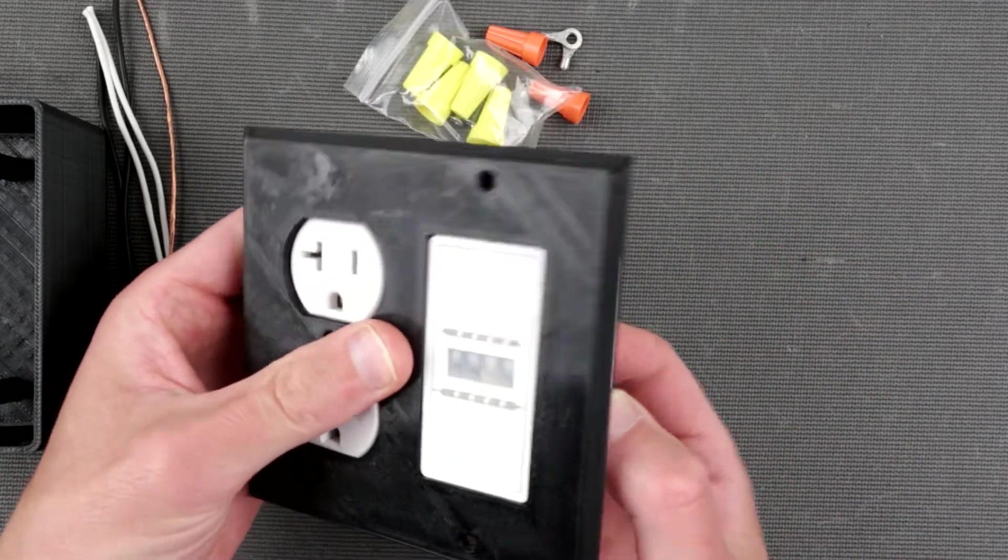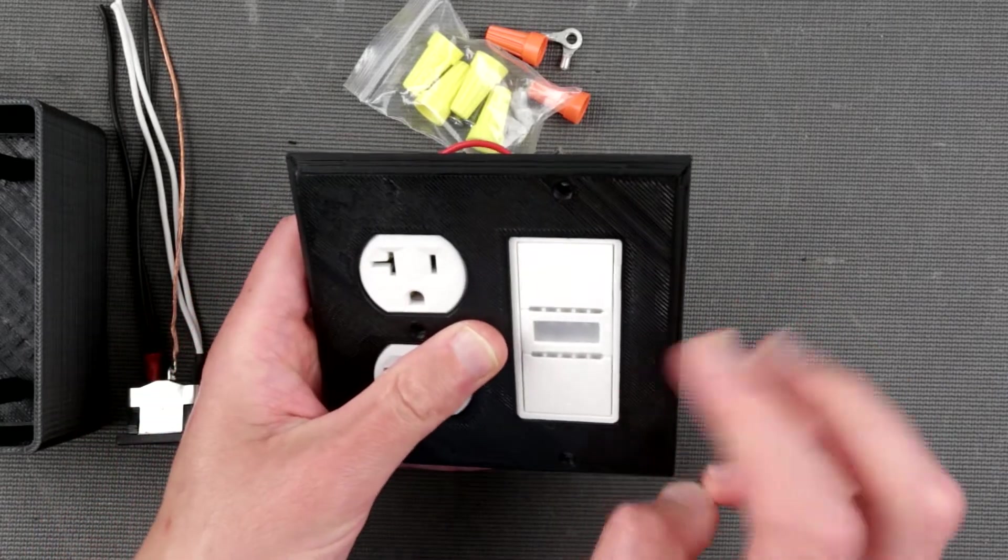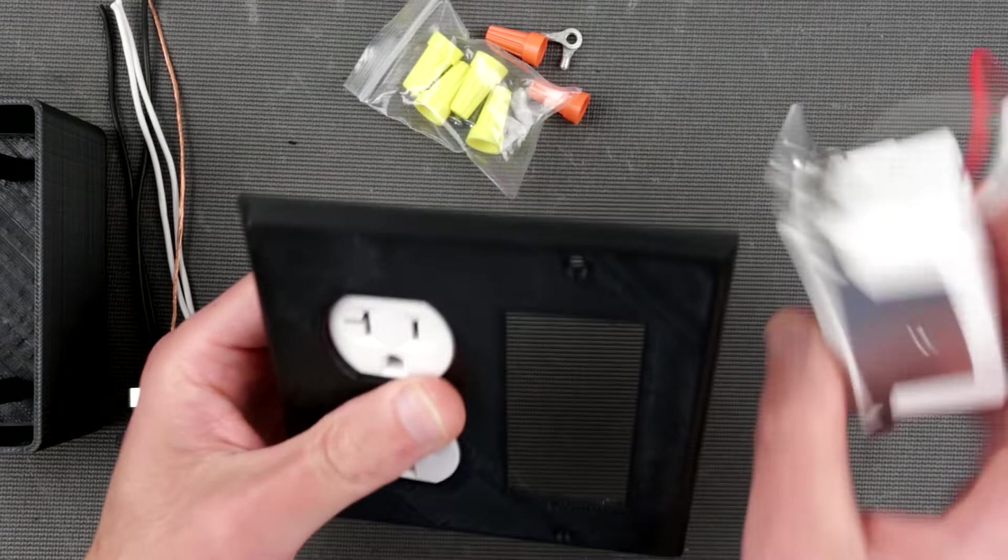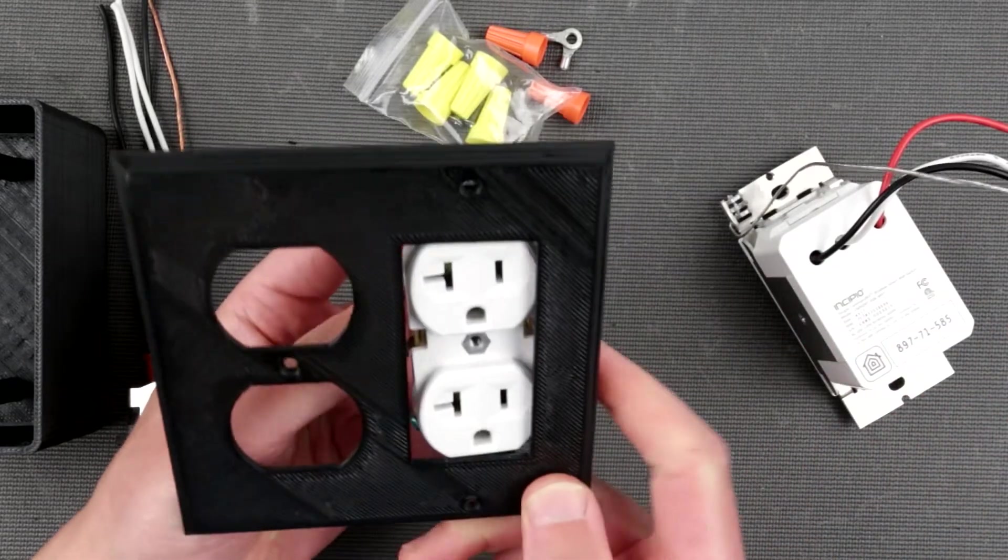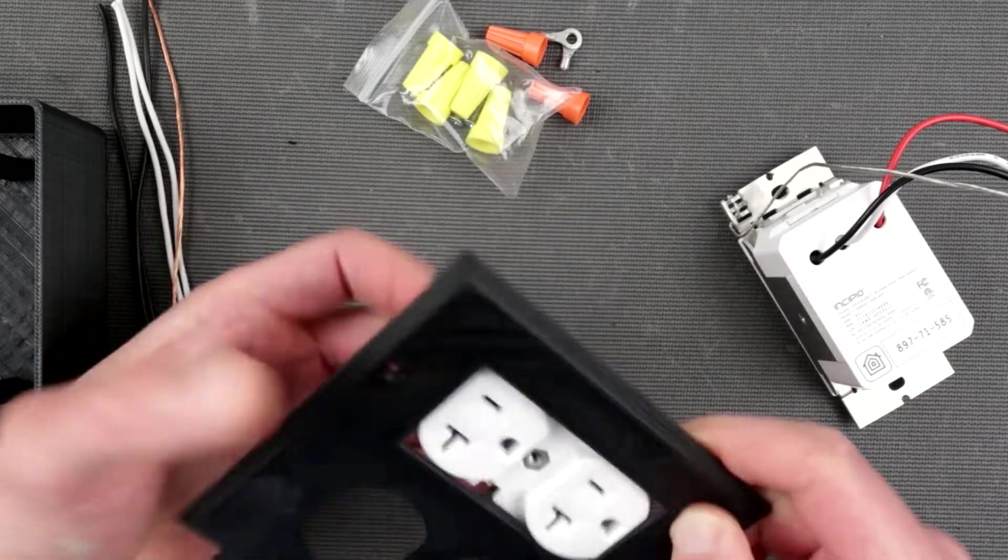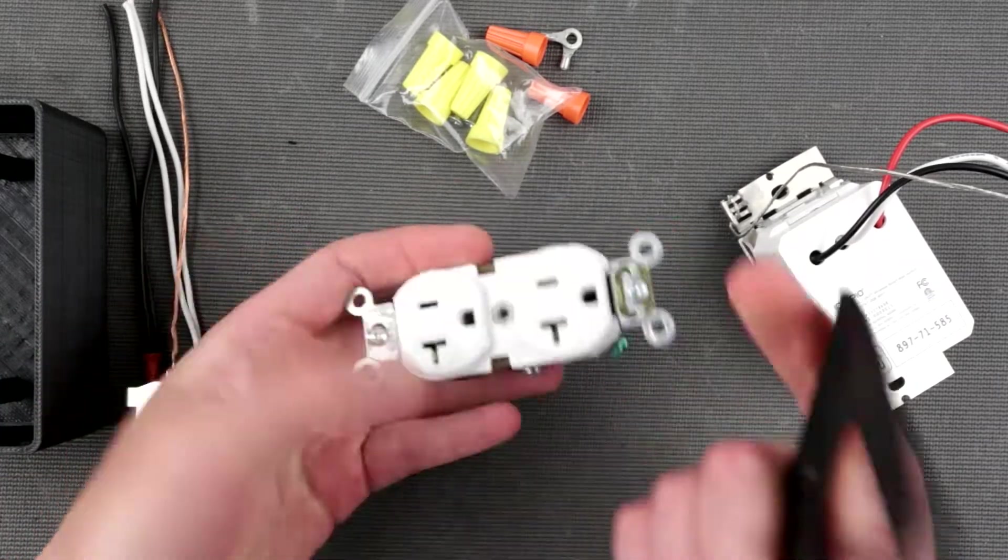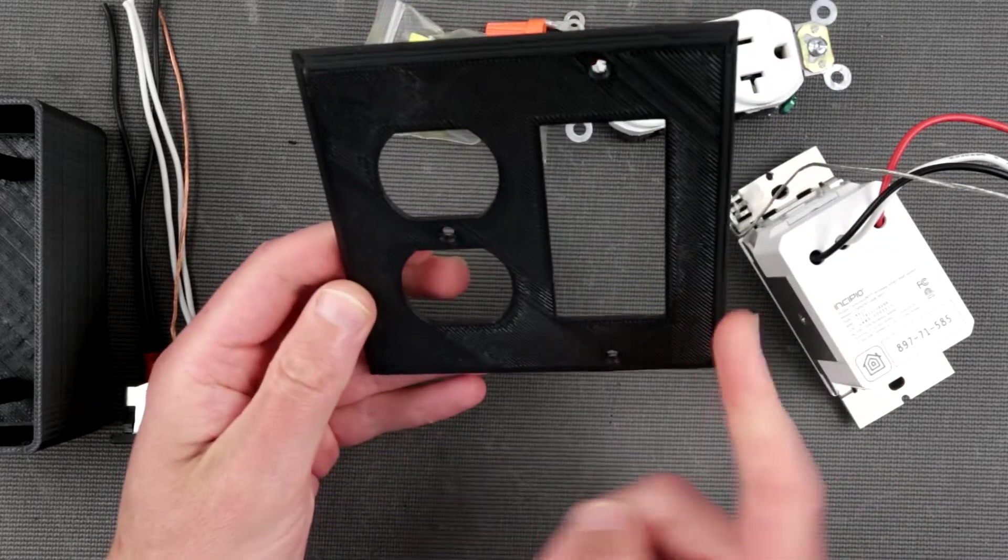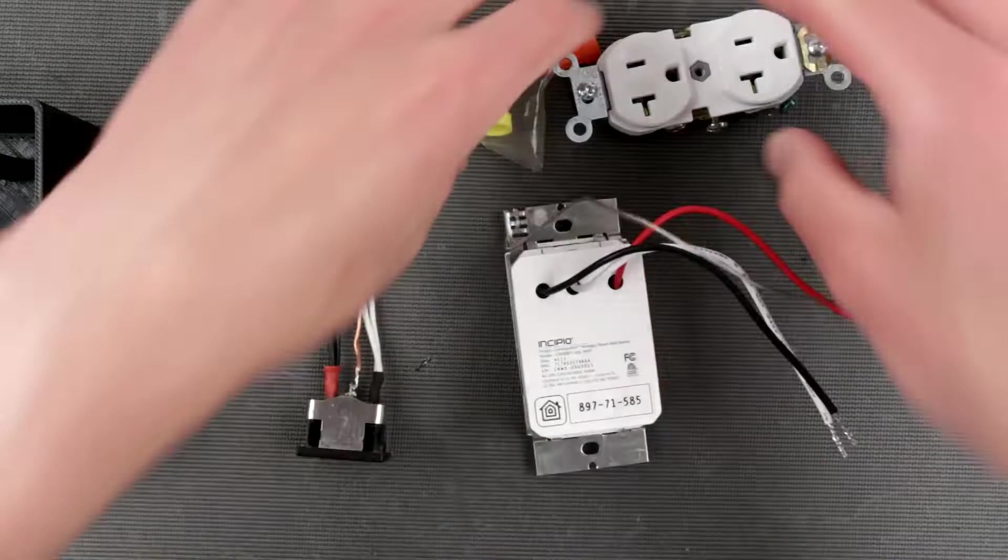So the faceplate is gonna go here and the dimmer gonna go here. This design is specifically for the rectangular cutout, they call it designer rocker switch. That can be pretty much any device. I think even this will go here, yeah technically it can go here as well, looks ugly though. So let's just assemble everything together.